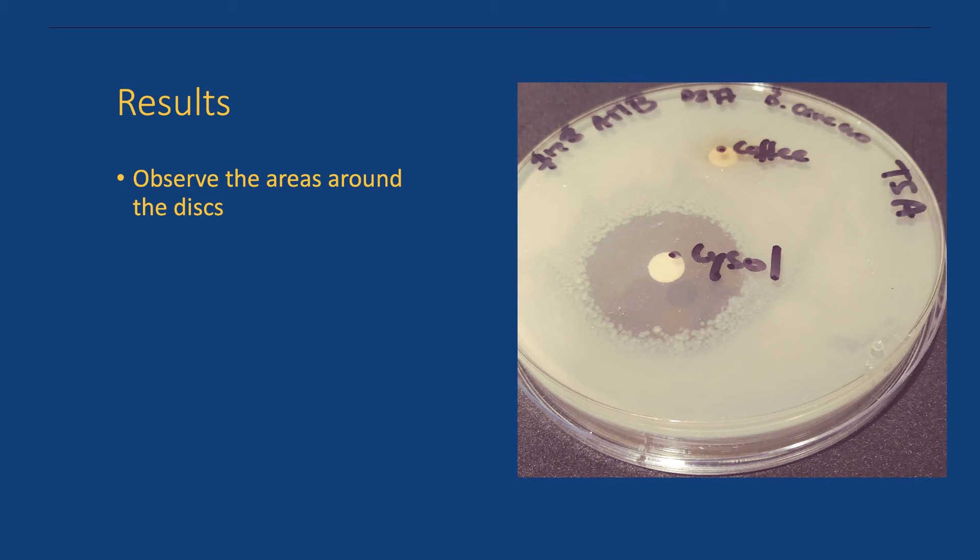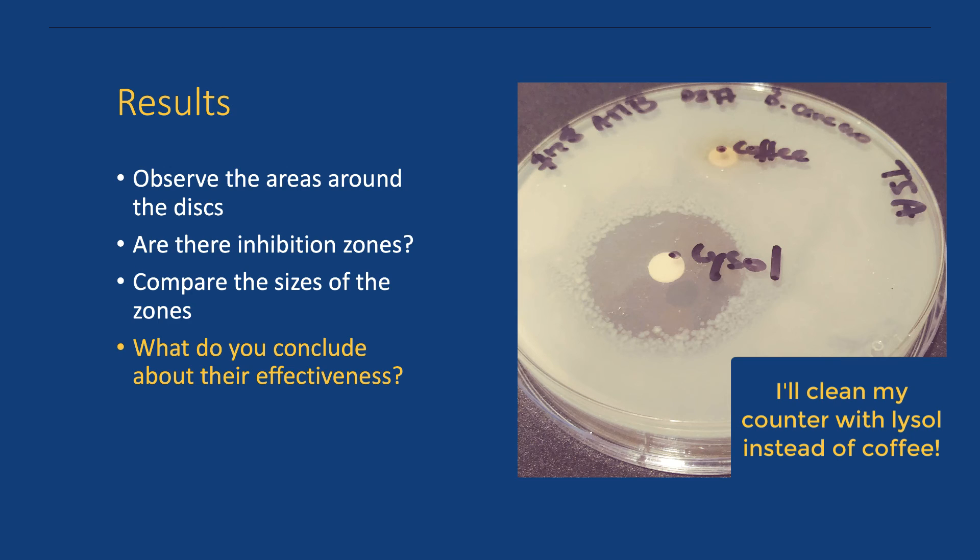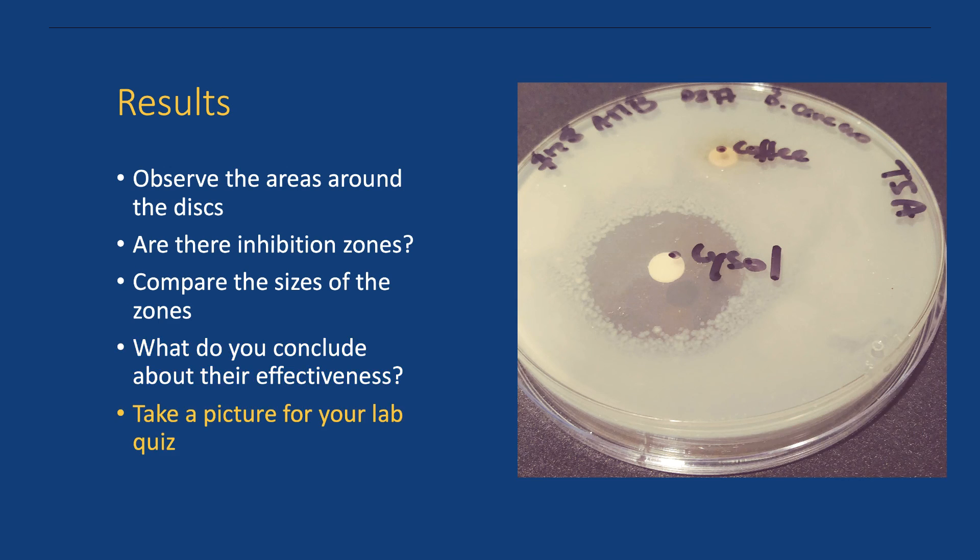Observe the areas around the discs. Are there inhibition zones? Compare the sizes of the inhibition zones from the different household chemicals. What conclusions can you draw regarding the relative effectiveness of the household chemicals you used? Take a picture of the plate to submit it in your lab quiz.